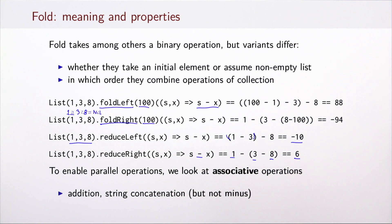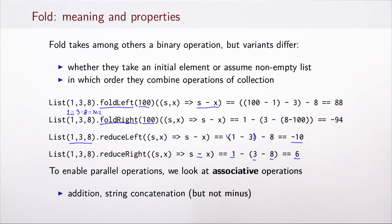When we wish to process elements of a collection in parallel, we would like the freedom of choosing the order in which we process elements — not only left to right but in more complex ways. For this to be correct, we require our operation to be associative. Examples of associative operations include addition or concatenation of strings, but not subtraction, which we used as an example.